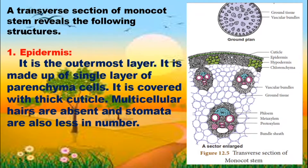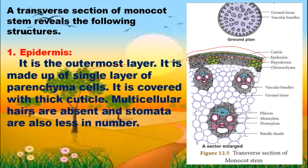The transverse section of the monocot stem reveals the following structures. The outermost layer is called the epidermis. It is a single layer made up of parenchyma cells with no intercellular space. It is covered with thick cuticles — not thin cuticles, but thick cuticles.